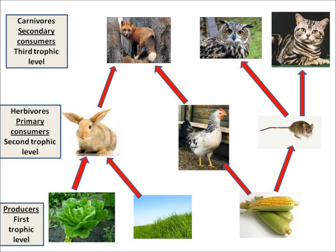I can see another food chain: the owl eats the mouse and the mouse eats the corn. So there are a number of different food chains within my food web, and my food web shows which organism eats which organism.